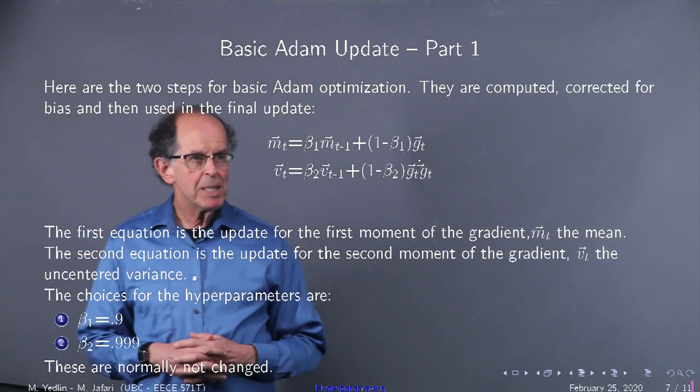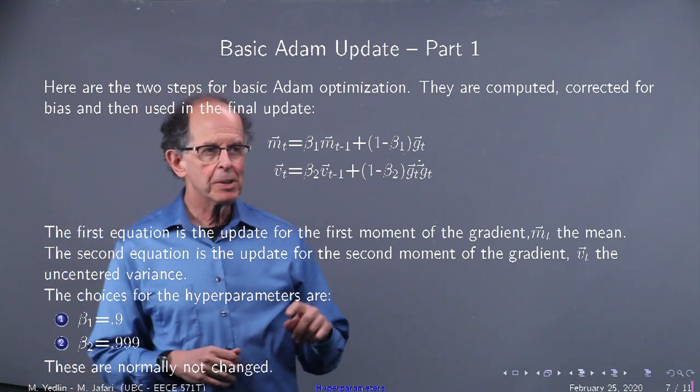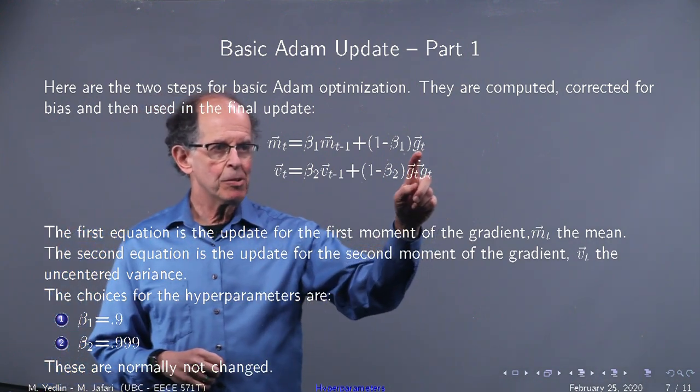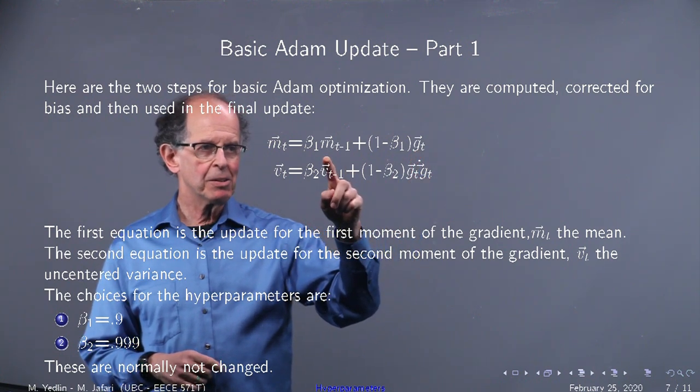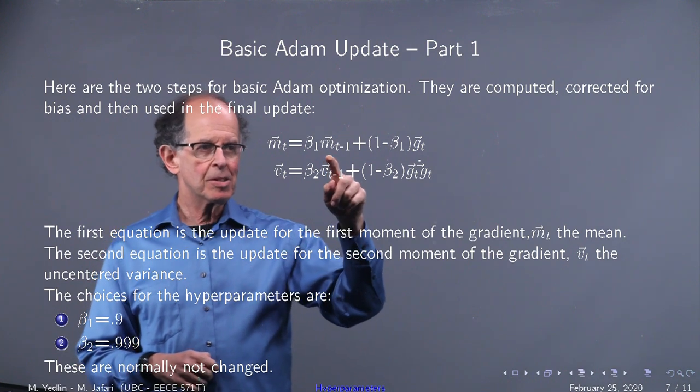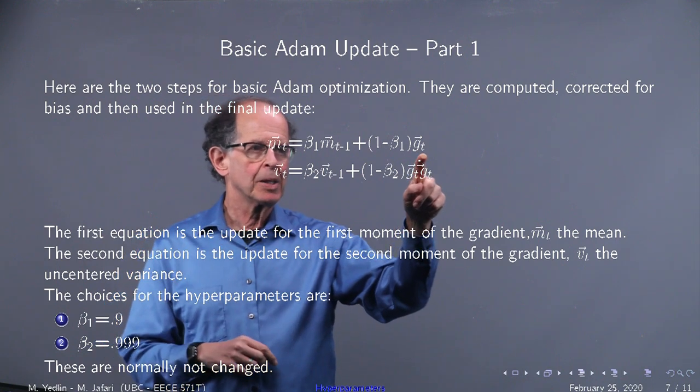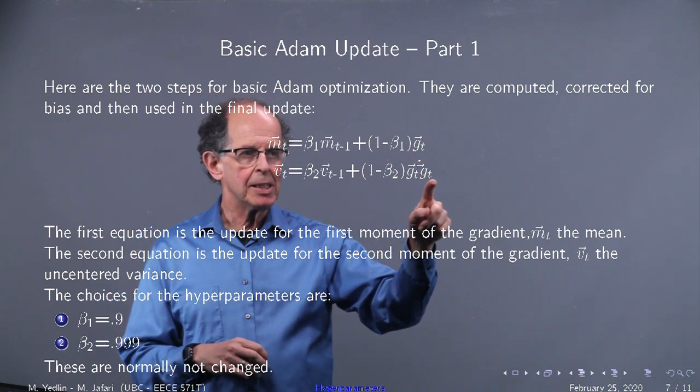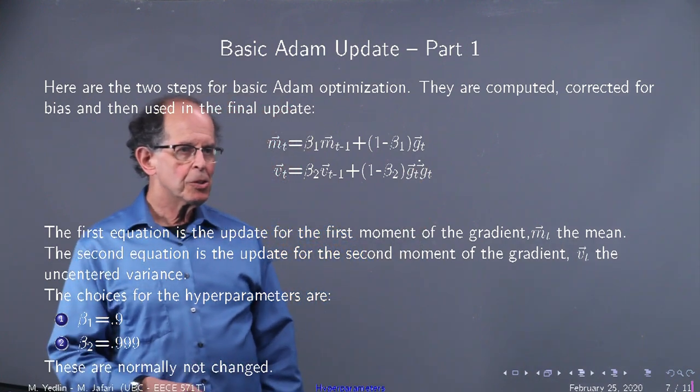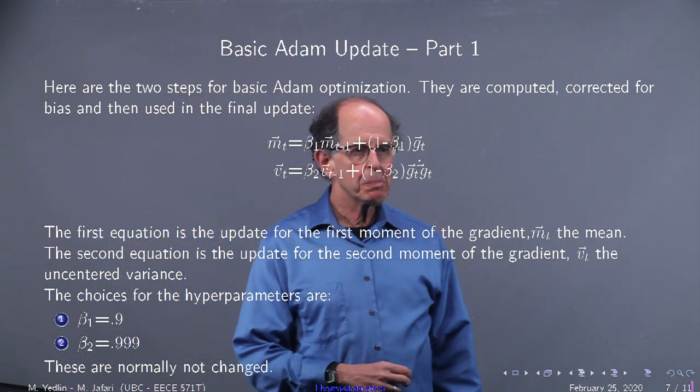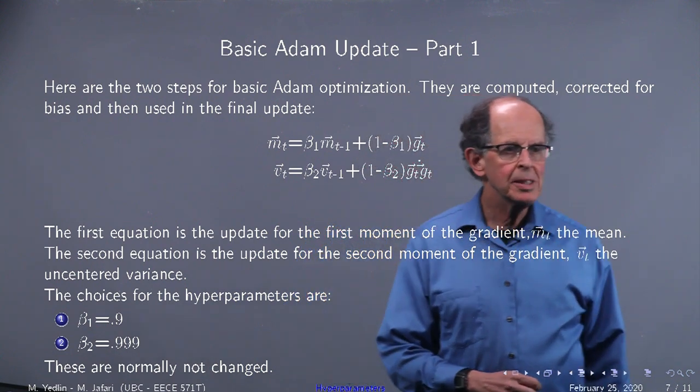Here's the basic Adam update. It looks kind of similar to basic momentum but the point is, for example, the first one is the gradient weighting. So it's the previous value of the first moment, this is the gradient update and this is a moving average. And the same with v. You have to compute these as you go. Here are the choices for the hyperparameters: 0.9 and 0.999. They're normally not changed.